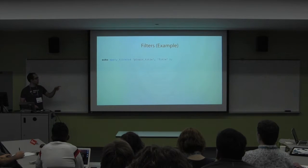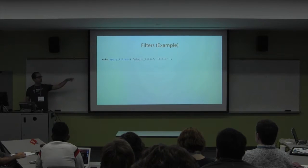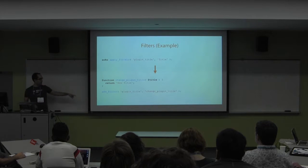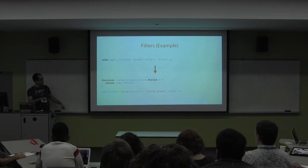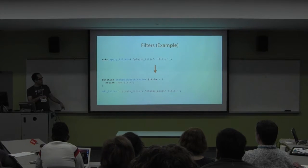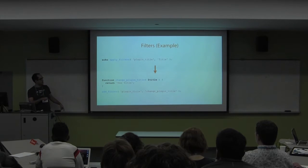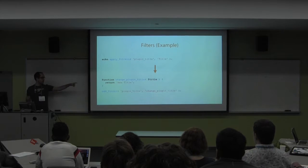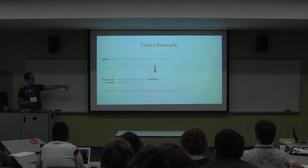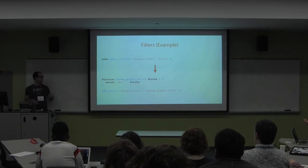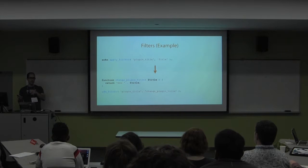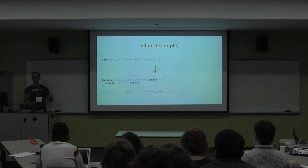For example, if you're echoing a title from the plugin and you use add_filter with a function called 'change_plugin_title', you take that title and return 'new title.' It ignores the original completely. Alternatively, you can take the original title value and just append something to it instead of replacing it entirely.